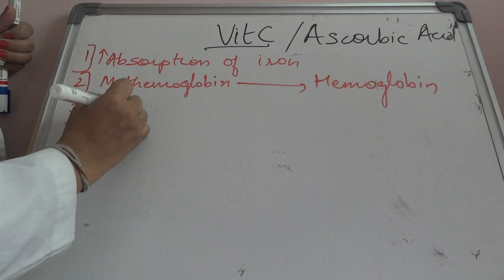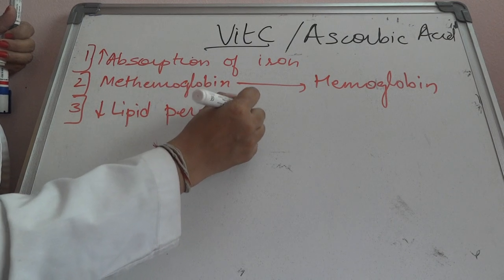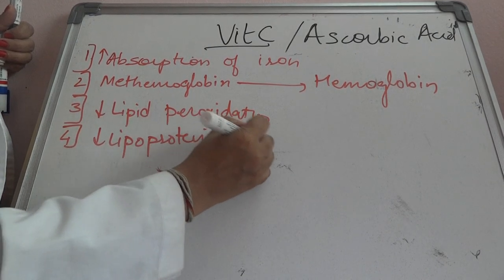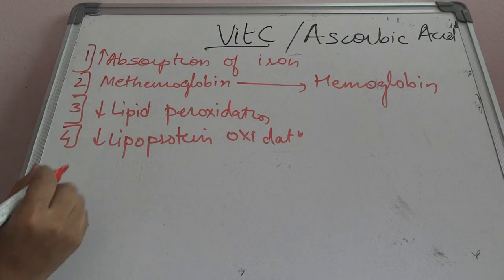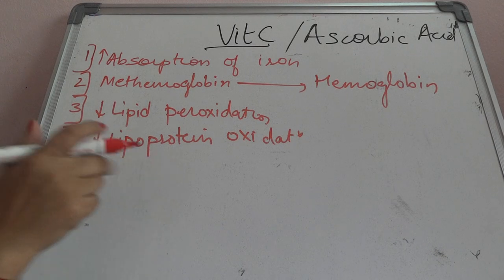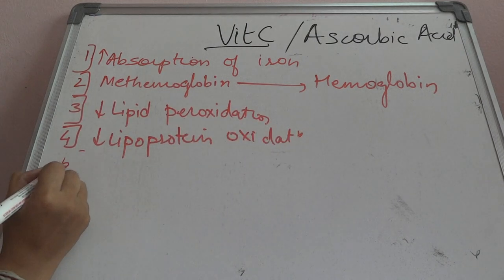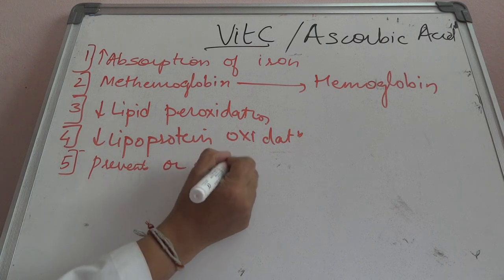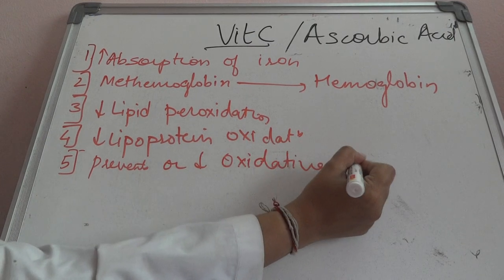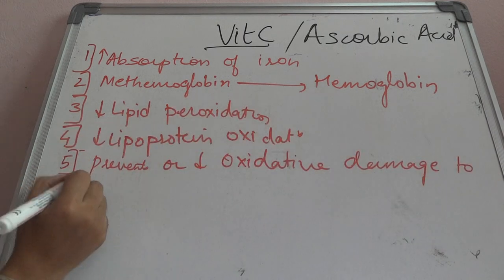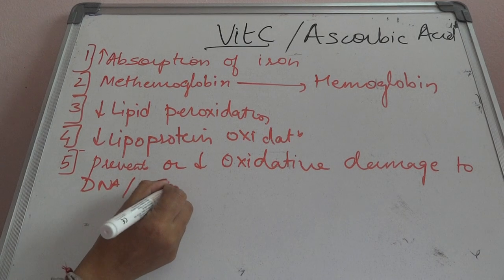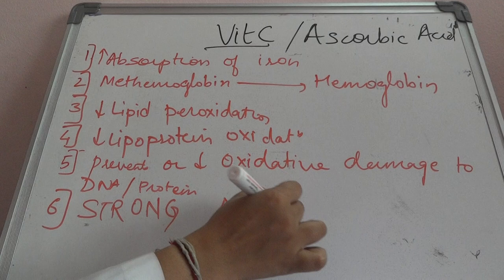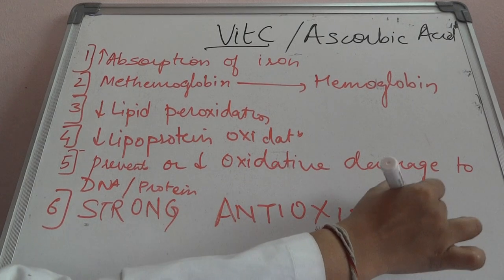Vitamin C decreases lipid peroxidation and decreases lipoprotein oxidation. It also prevents or decreases oxidative damage to DNA and protein. Most importantly, vitamin C is a strong antioxidant.